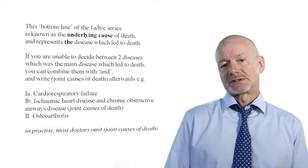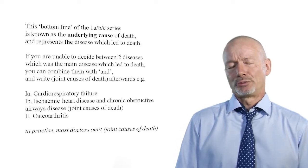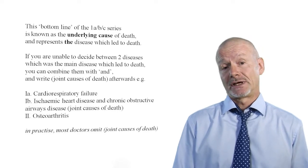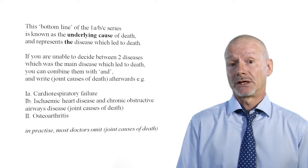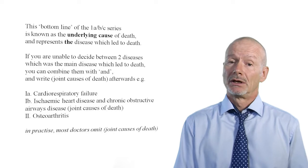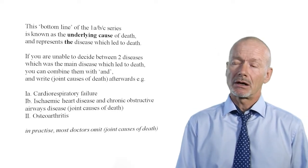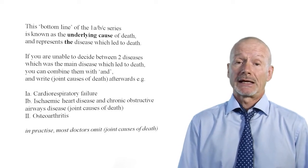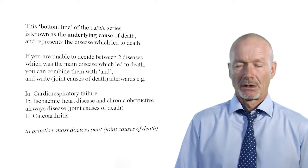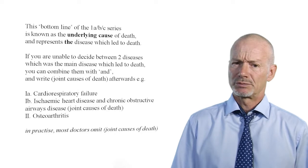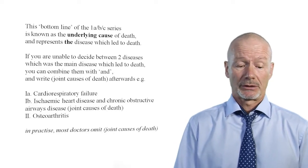The bottom line of the 1 series is supposed to be the reason why someone has died. When filling in certificates for an older patient with a combination of, say, chest infection and heart failure, step back from the case and decide which is the predominant cause of death — did they die of their heart disease with the chest infection as a secondary issue, or the other way around? Structure the cause of death accordingly. If you really can't decide between two things, you're allowed to put them both as equal causes of death, writing 'combined cause of death' in brackets afterwards, though many people omit that last step.